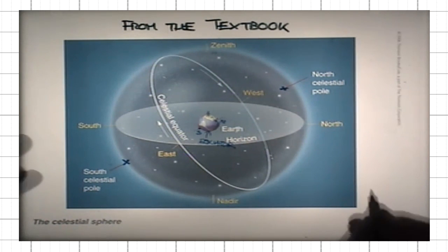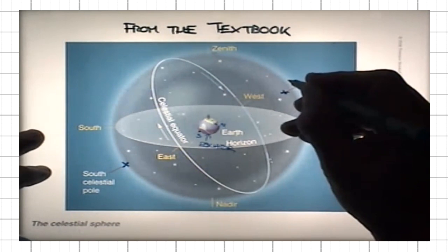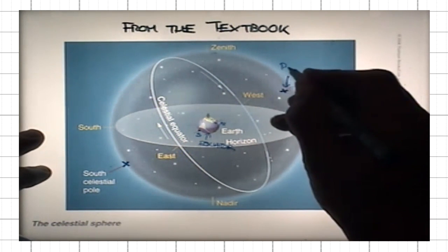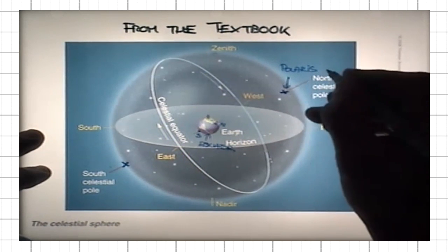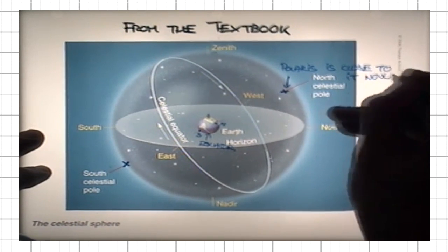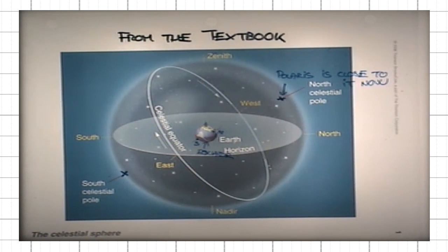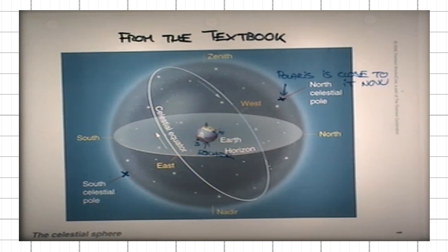We know that right now, or for a few thousand years around the time in which we live, there is a star close to the North Celestial Pole, and that star is Polaris. As it happens, there is no star that is close to the South Celestial Pole in the Southern Hemisphere. Nevertheless, one can use the constellation called the Southern Cross and its motion to actually pinpoint the location of the South Celestial Pole. But right now, there is no star sitting close to the South Celestial Pole.